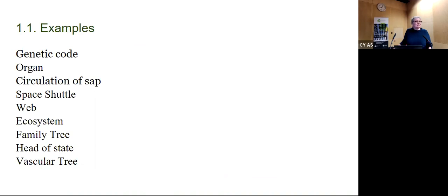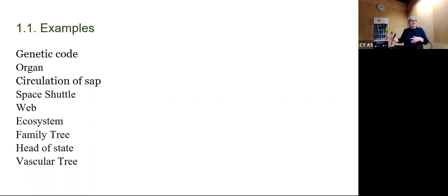A few other analogies: 'organ', because in Greek organ means tool — organon. 'The web,' of course without spiders. And 'the head of state,' which is a very ancient analogy. Some analogies are based on function, others on morphology. The vascular tree is perhaps based on morphology, but sap circulates within the tree in more or less the same way that blood circulates in the human body and other animals.